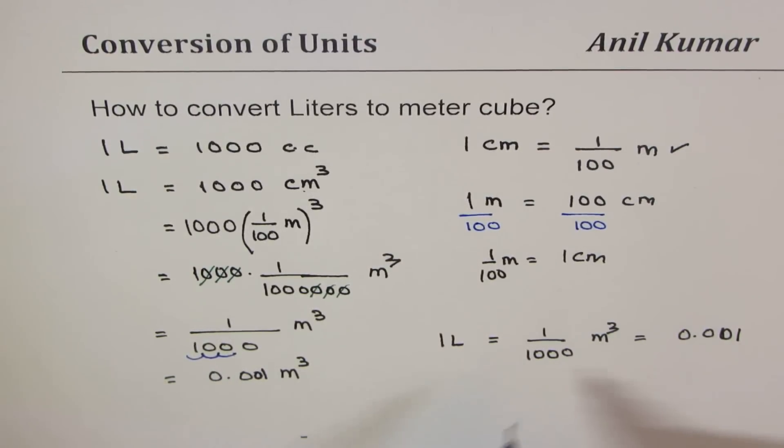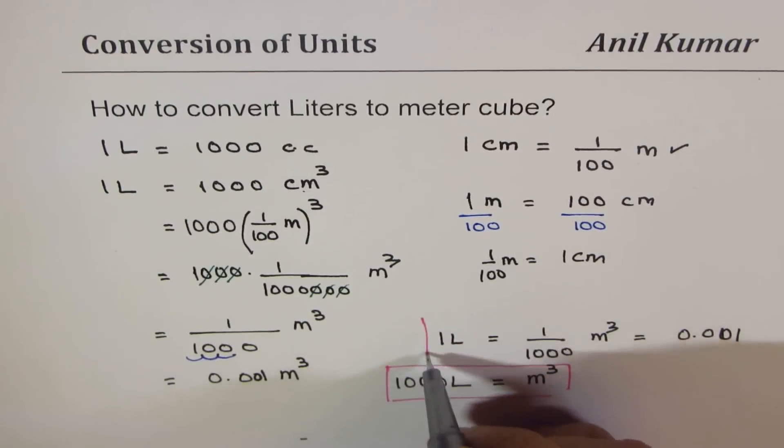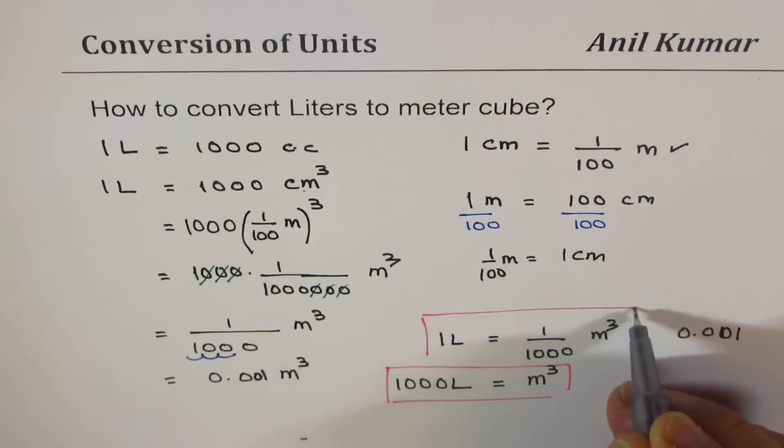You could also write that one thousand liters is equal to one meter cube. That is how they are related - one thousand liters is one meter cube, or one liter equals one over thousand meter cube.